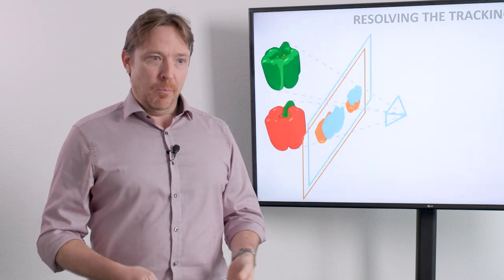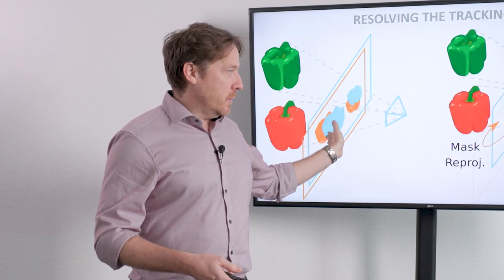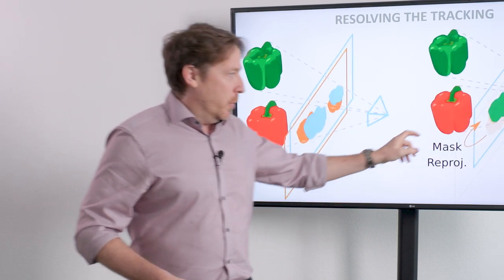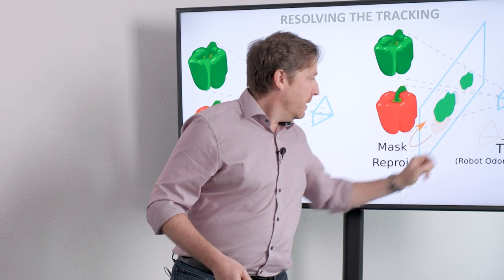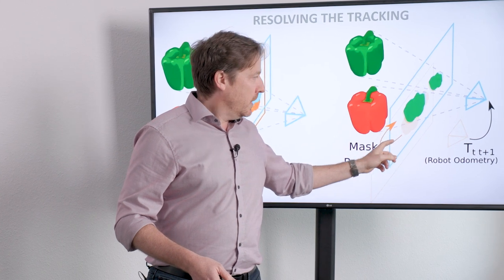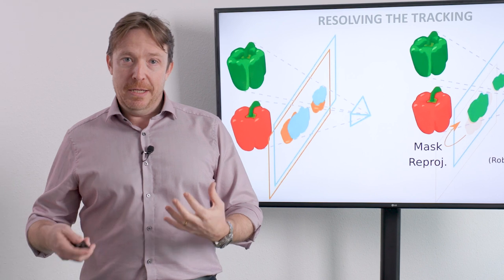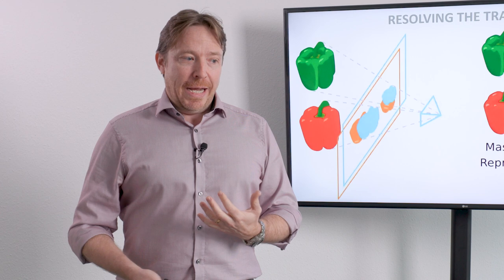By not just assuming that we have a high overlap between these two images, but also because we now have an estimate of how the robot or the camera moves within that scene, we can then take the previous estimate of where the fruit was, project it to the new frame, and have a really good idea that this is actually the same object. And that allows us to do some really good tracking.